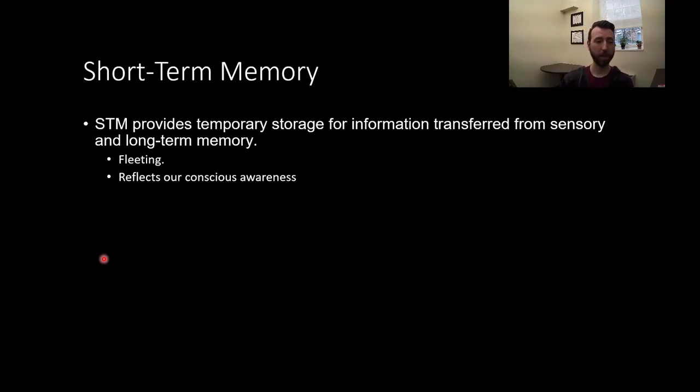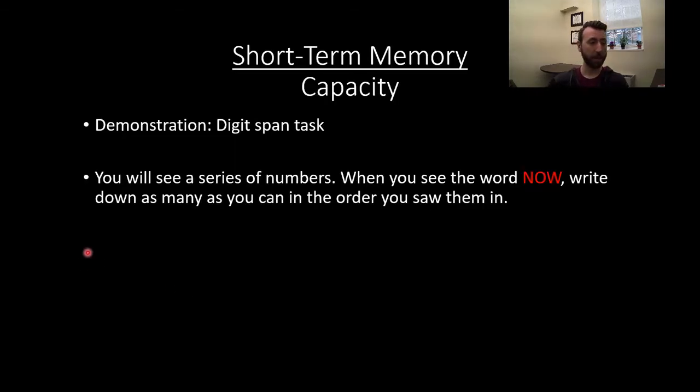Let's talk now about short-term memory. Short-term memory provides temporary storage for information that is transferred from sensory and long-term memory. You can go either direction, information brought up from long-term memory or information coming from our sensory memory. This is fleeting and reflects our conscious awareness. So it's just around for a brief period of time, hence short-term memory, and reflects what we're consciously aware of.